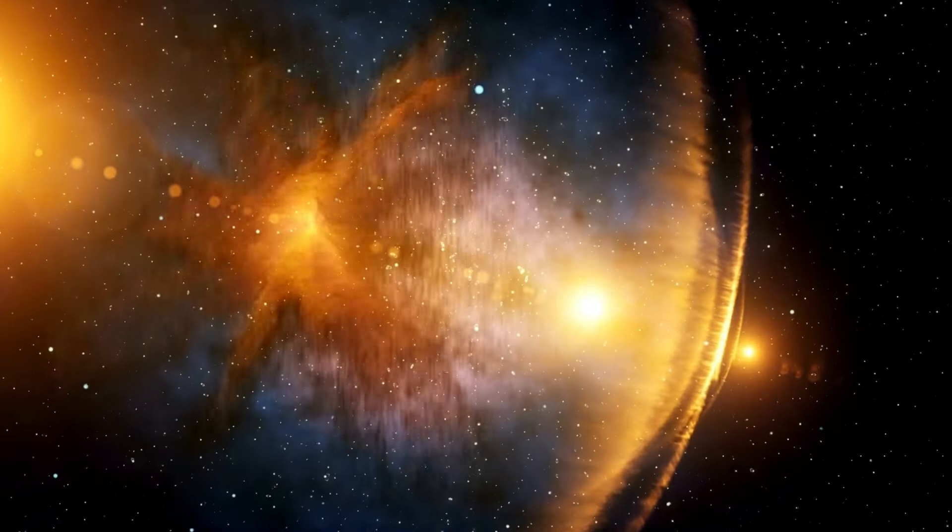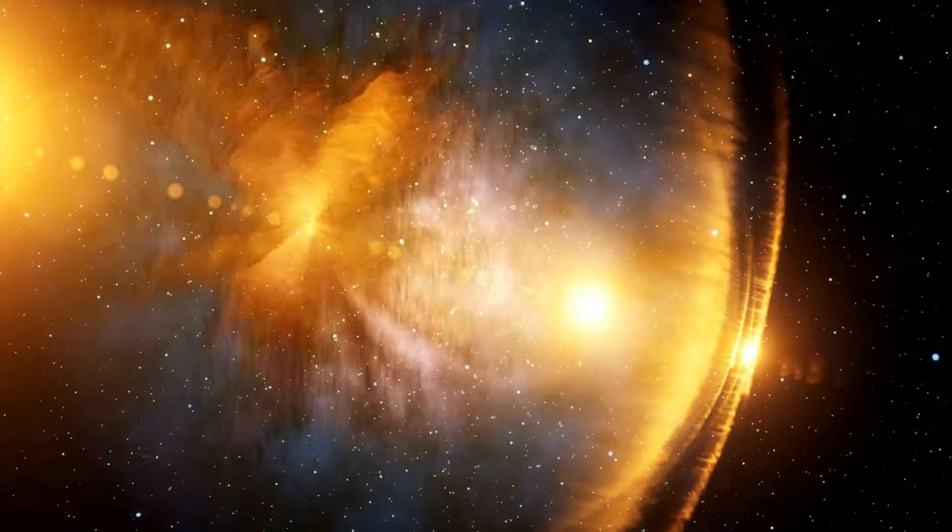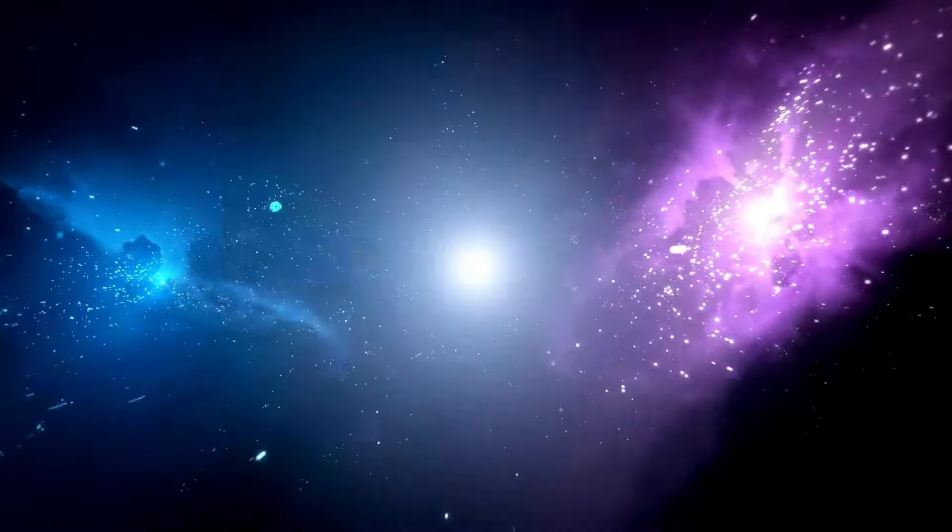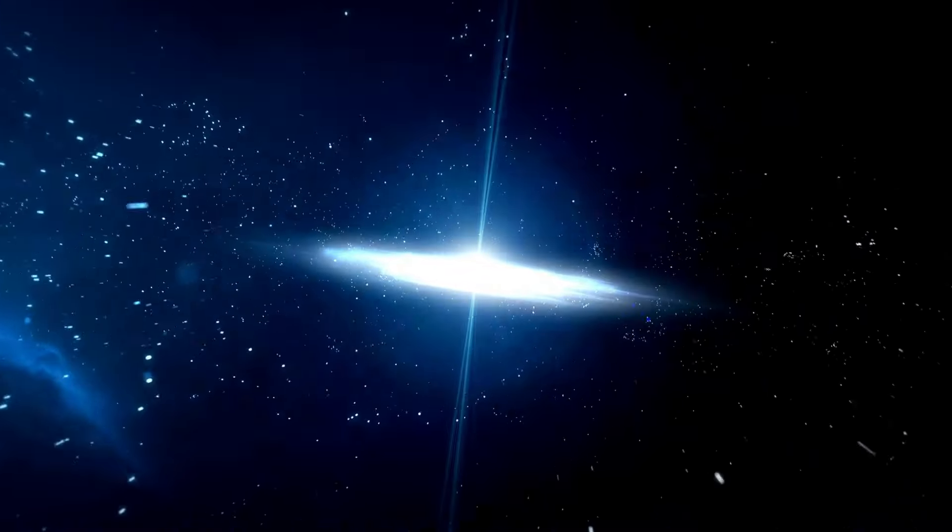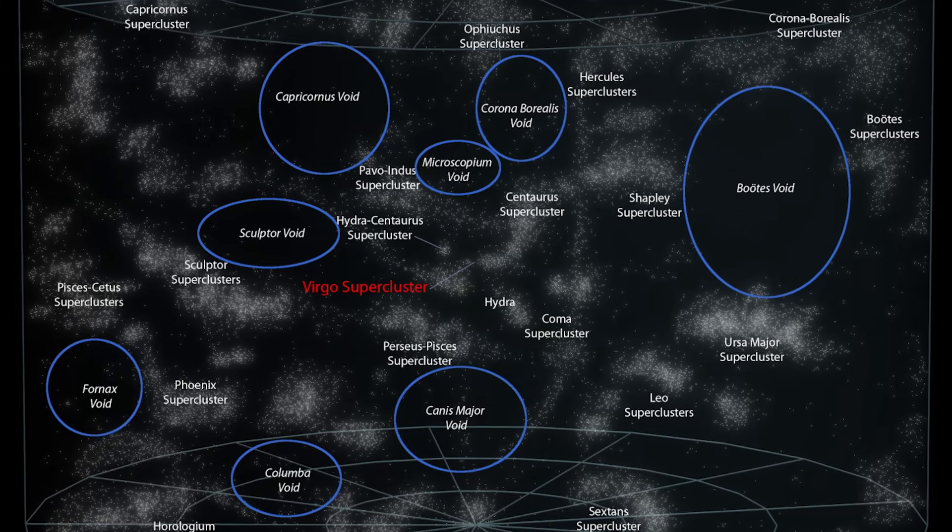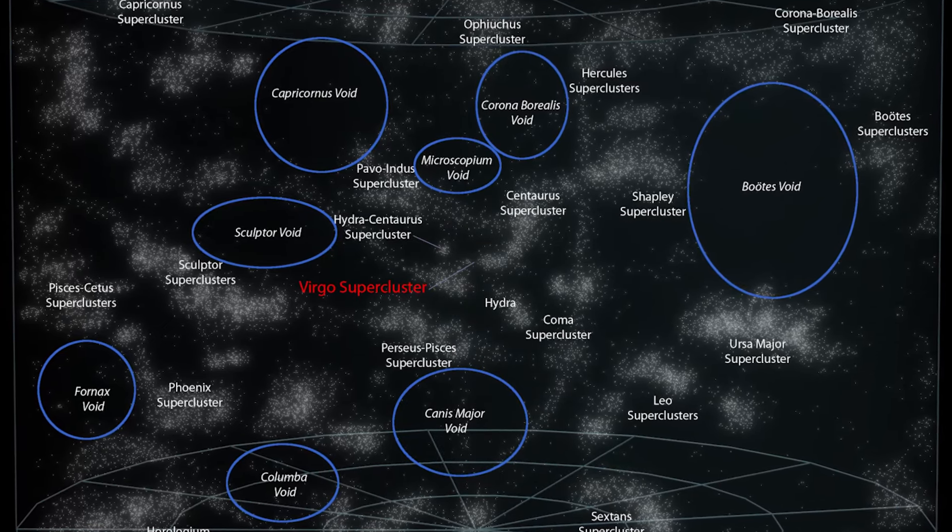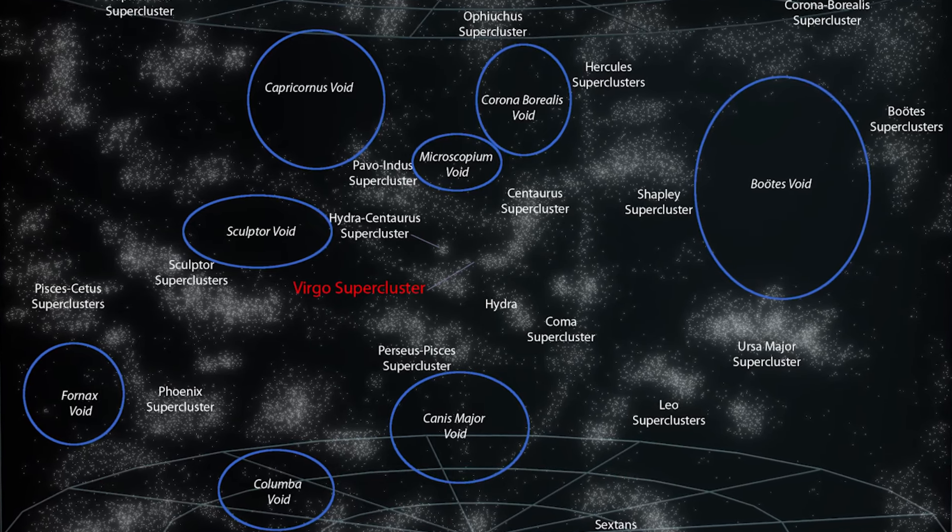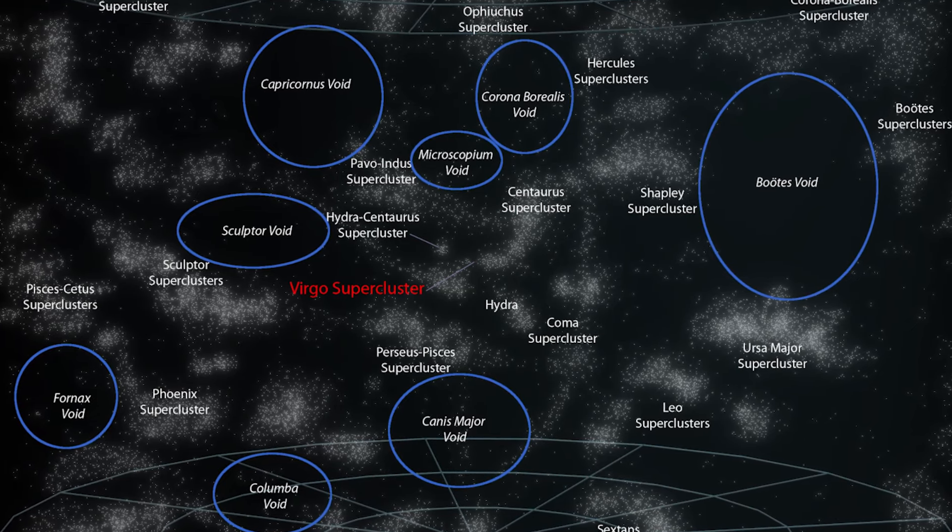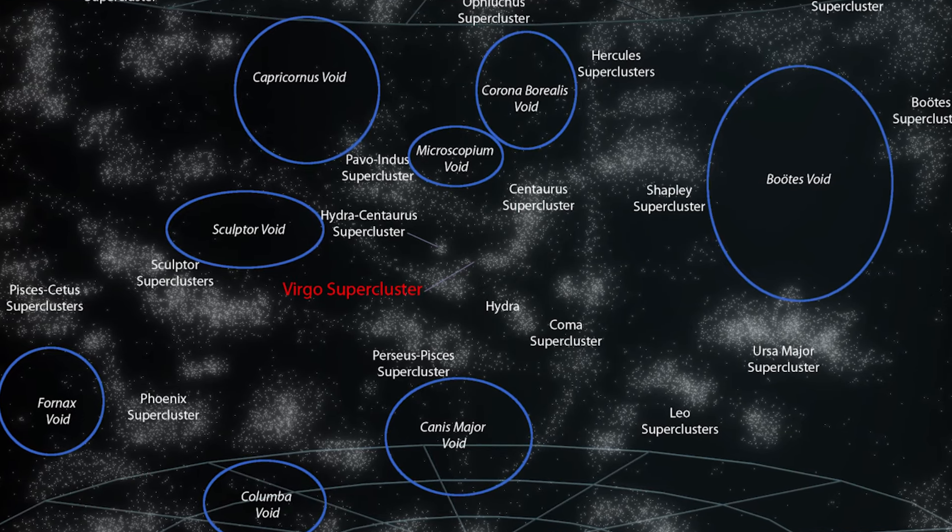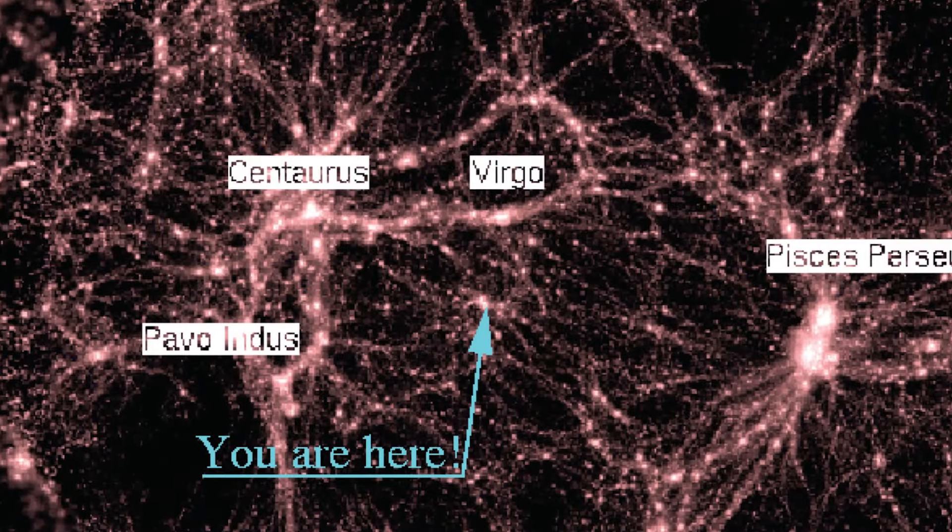The scale of the universe becomes even more staggering when we consider the vastness beyond the galaxies. We find regions in space known as cosmic voids, where matter is scarce compared to the rest of the universe. These cosmic voids are immense, spanning hundreds of millions of light years in diameter, and appear as vast expanses of seemingly empty space. However, these cosmic voids have the potential to give rise to the formation of future structures and galaxies.